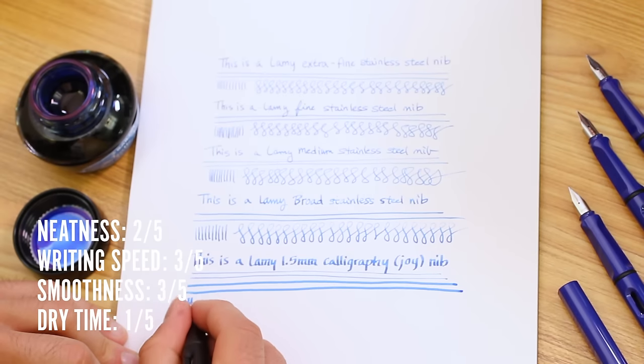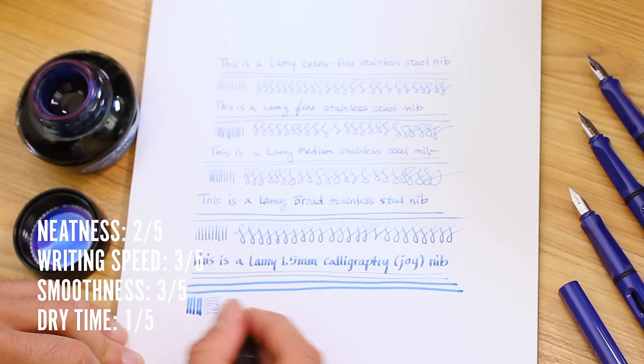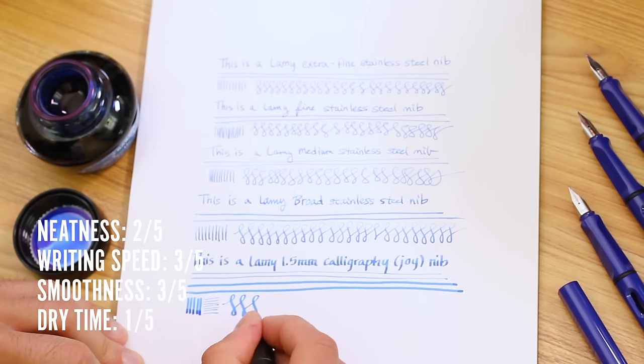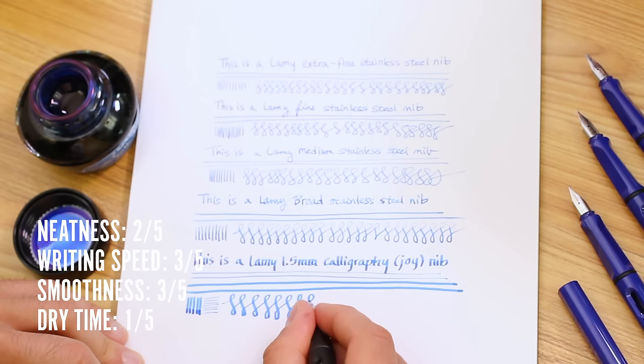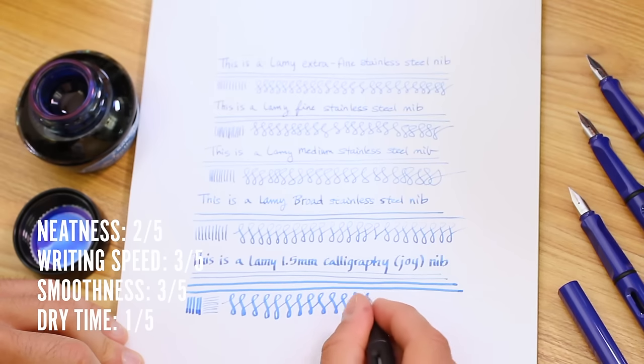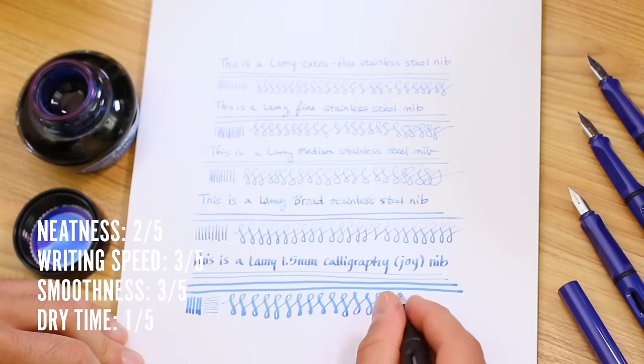Much like a broad nib, you can expect to see more depth of ink on the page with higher dry times. Stub and calligraphy nibs are best suited for aspiring calligraphers, adding a touch of flair to your everyday handwriting, and those who love seeing the depth of their ink on paper. Stub and calligraphy nibs are not suited for small note takers, people who use cheap or recycled paper, and those who like quicker dry times.